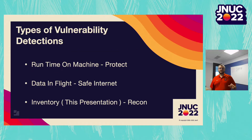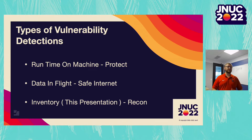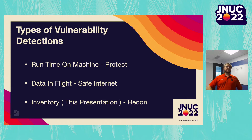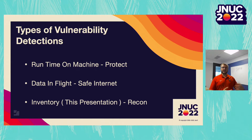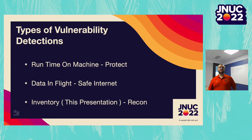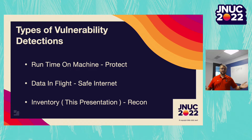So when we talk about vulnerabilities, there are kind of three different ways that you're able to detect them. We start with probably the best method, the gold standard, which is runtime on machine. This would be our Protect agent or EDR agents in general. As an application starts up, the EDR solution constantly is polling it and finding out what's going on, where is it reaching out to, does it match any known hashes for files? This is usually for spyware detection, malware detection, or viruses — that kind of heavy intrusive detection. We offer that through our Protect agent.